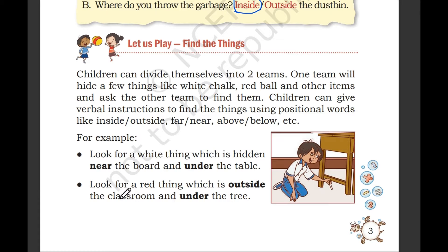Very good. Look at the red thing which is outside the classroom and under the tree. Now you have to give an example like this. Look at the black thing which is on the top of the table. This is an example of positional words.